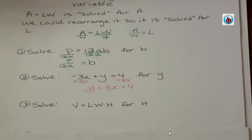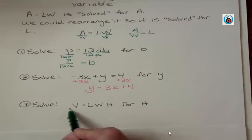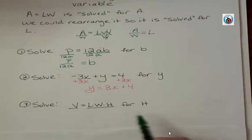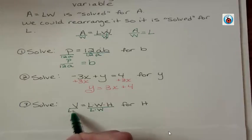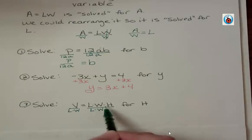All right. Solve V equals LWH for H. You should try this one on your own. It's similar to something we've already done. This is the formula for the volume of a rectangular prism or something that has a length, a width, and a height. So we want to solve for H. Well, what do we want to get rid of then? We want to get rid of the L and the W.